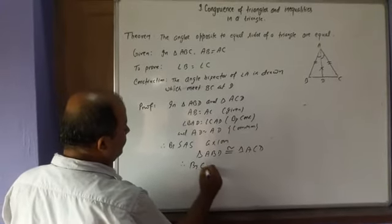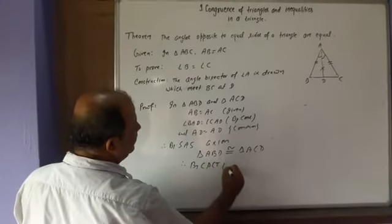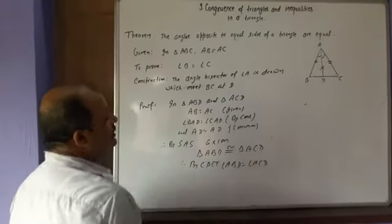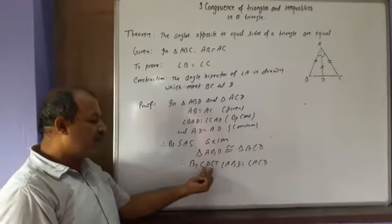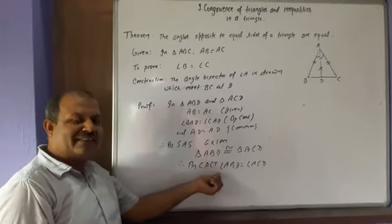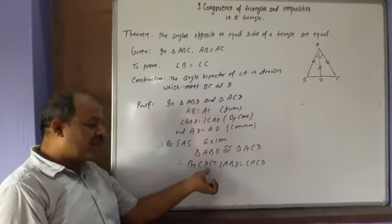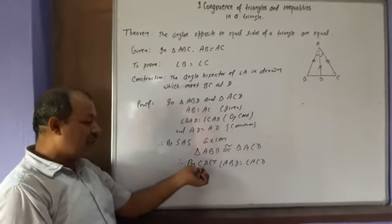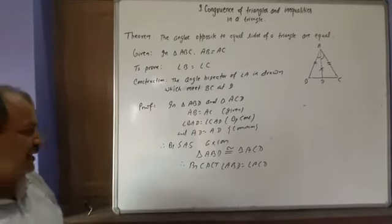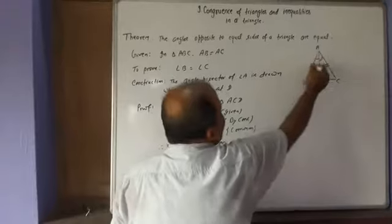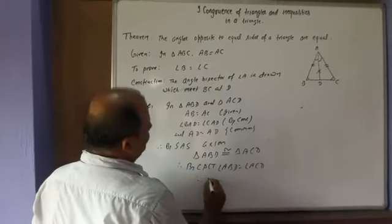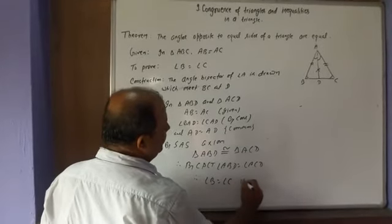Therefore by CPCT, angle ABD equals angle ACD — that is, angle B equals angle C. CPCT stands for Corresponding Parts of Congruent Triangles. If two triangles are congruent, their corresponding parts are equal, so angle B equals angle C.